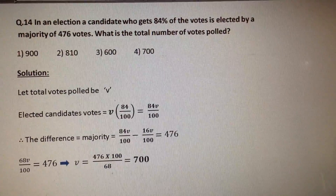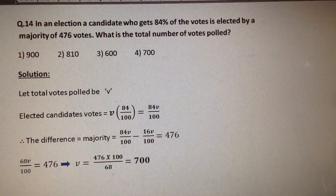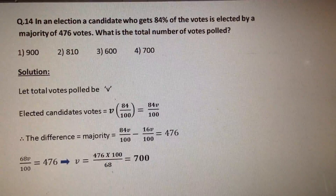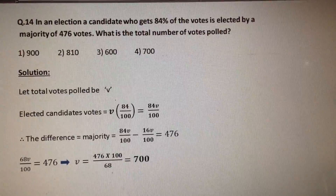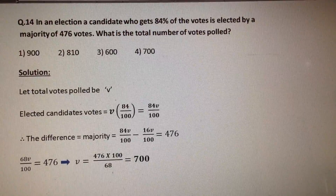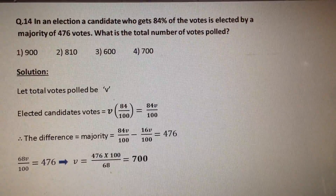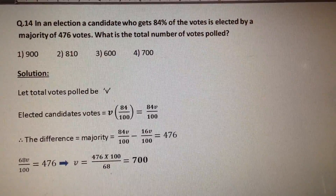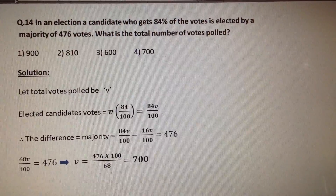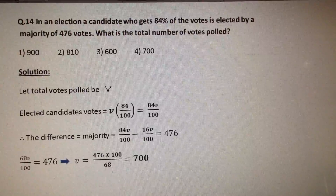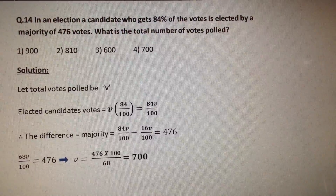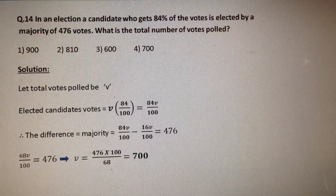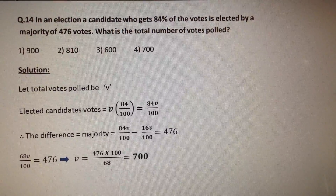In an election, a candidate who gets 84% of the votes is elected by a majority of 476 votes. What is the total number of votes polled? This is a very simple question.